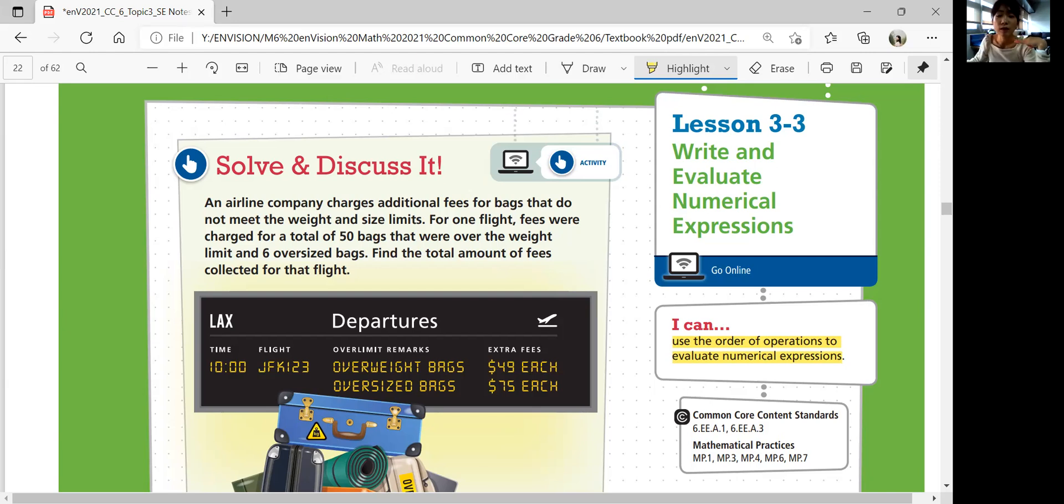Let's look at solve and discuss it. An airline company charges additional fees for bags that do not meet the weight and size limits. For one flight, fees were charged for a total of 50 bags that were over the weight limit and six oversized bags. Find the total amount of fees collected for that flight.